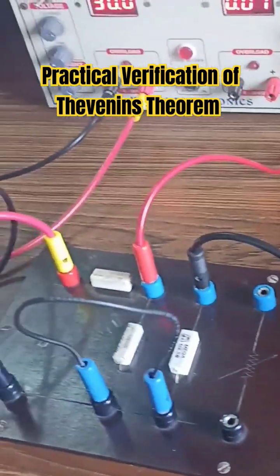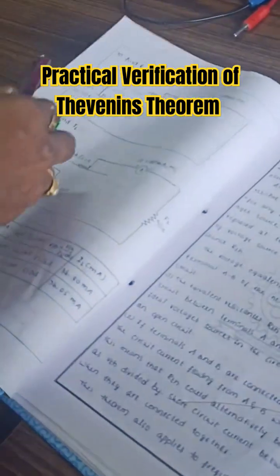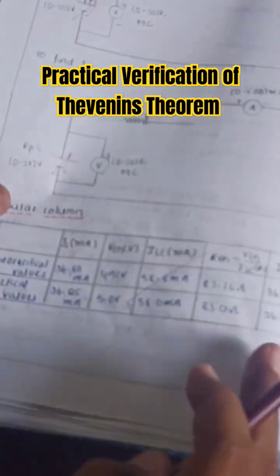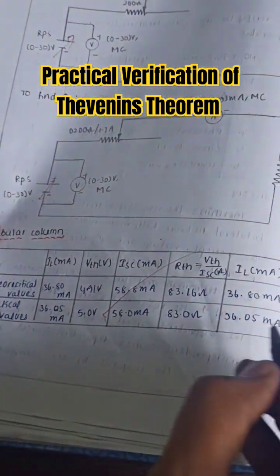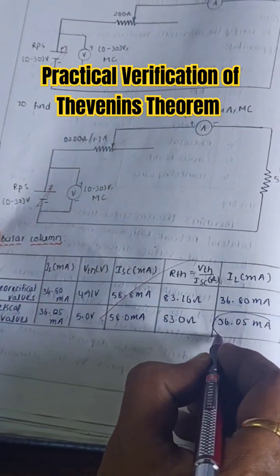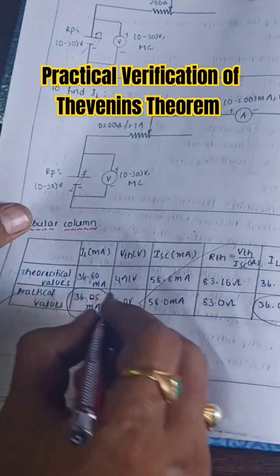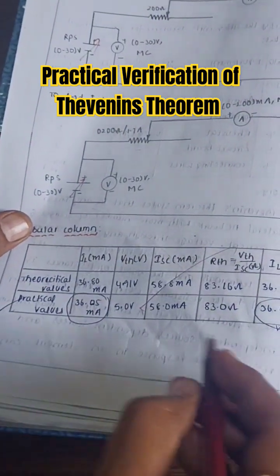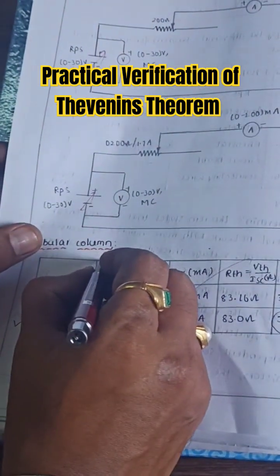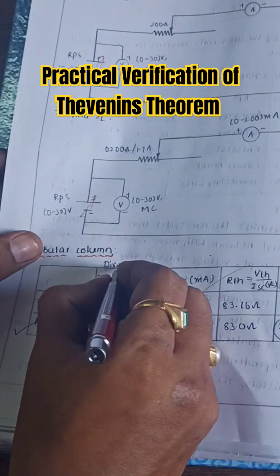Here you can see the tabular column, we have to plot the tabular column for the practical values. The current what we had got is 36 milliamperes, the practical value by direct method. By Thevenin's you have to get 36 milliamperes. This is the IL current by direct method.